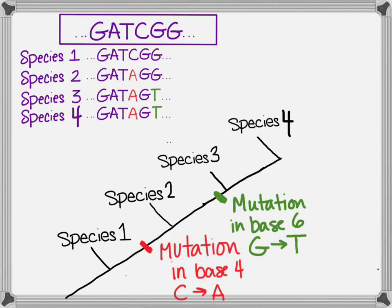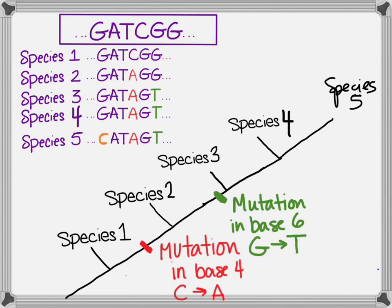How many mutations does species 3 have? Two. Therefore it should be sitting above, or to the right of, at least two mutations on this cladogram. But what if we had another species? Species 5 has got a third mutation — a change in that first base, it's gone from a G to a C. Can we show that on this same cladogram? Of course we can! We would extend the line and put species 5 out there. We need to add it right after species 4 and before species 5, and we're going to note that there's a mutation in base 1 where the G turns into a C.